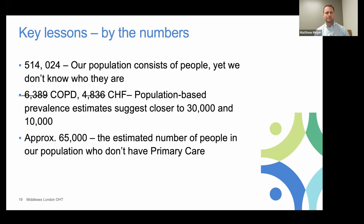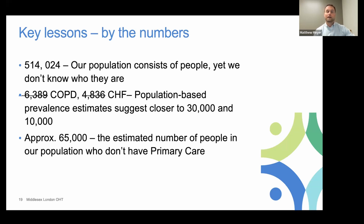Here are the key lessons from those early days. We said '514,024' over and over again to the point where it became almost a joke within our OHT — and as our attributed population shifted, we said other numbers too. We did that intentionally, because right from the beginning we wanted everyone to understand that if we're going to drive population health management, we need to acknowledge those 514,024 people are people. We need to get to the point where we're not just creating aggregate reports, but understanding who they are at an individual level, what they need, and designing the system to proactively connect with them.